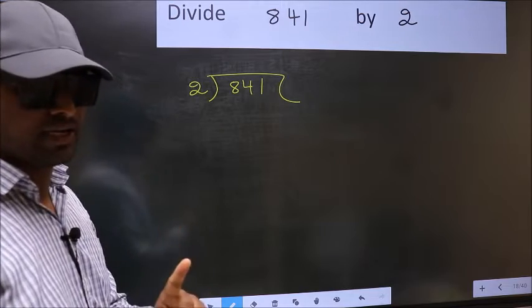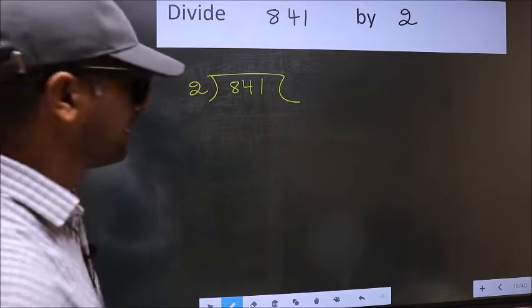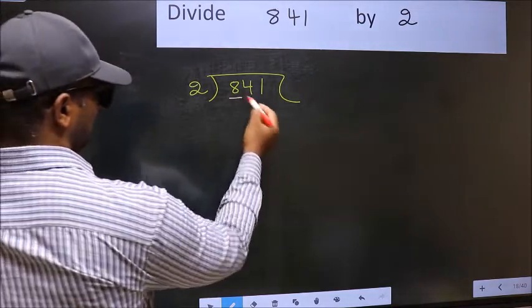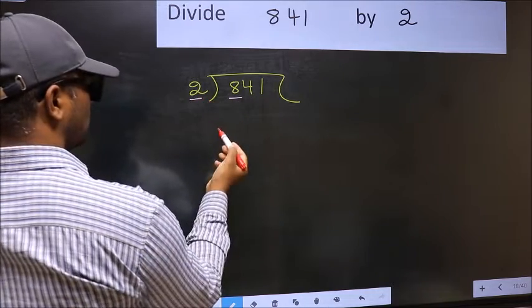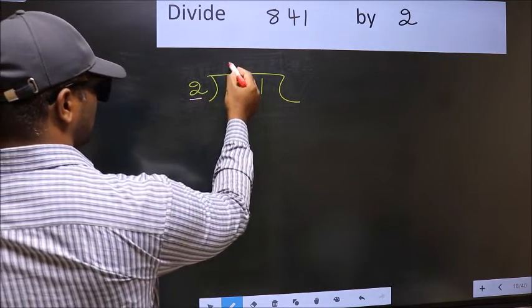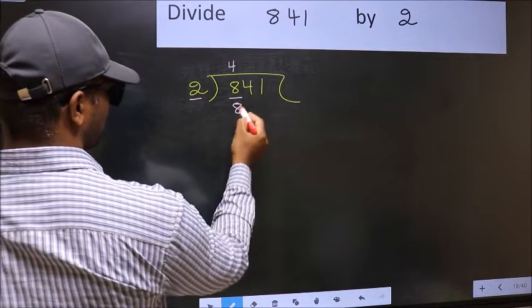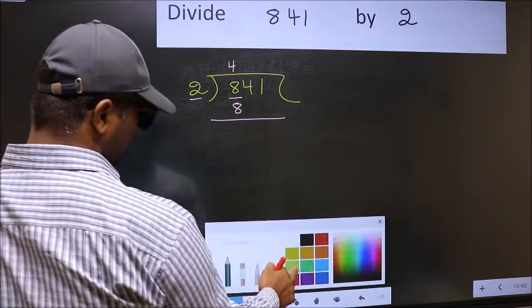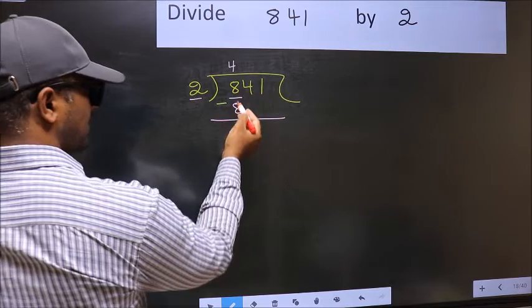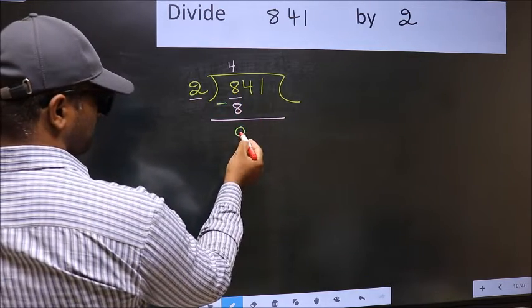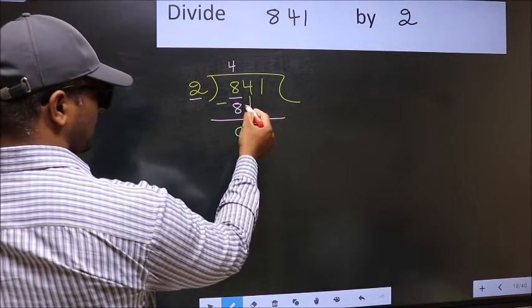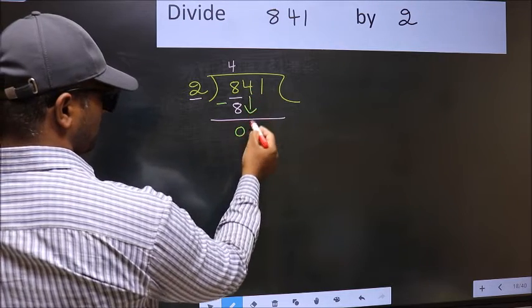Here we have 8 and here 2. When do we get 8 in the 2 table? 2 fours are 8. Now you should subtract 8 minus 8 equals 0. After this, you should bring down the beside number, so 4 down.